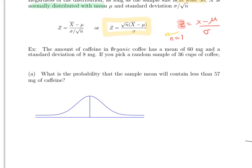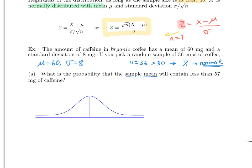The problem states: the amount of caffeine in organic coffee has a mean of 60 milligrams, so μ = 60, and a standard deviation σ = 8. Notice the problem doesn't say anywhere that it is normal, so you cannot assume a normal distribution. However, the next part says if you pick a sample of 36, then n = 36, which is more than 30 — so x̄ will be normally distributed and you can find probabilities about x̄ since the Central Limit Theorem applies. The question asks: what is the probability that the sample mean (x̄) is less than 57?